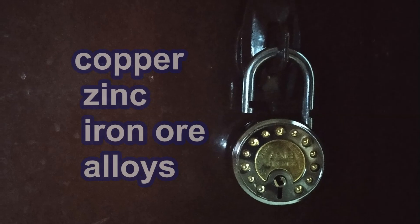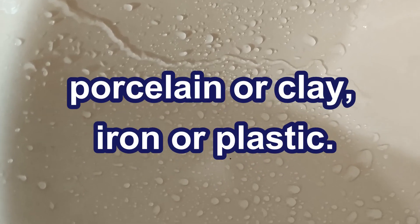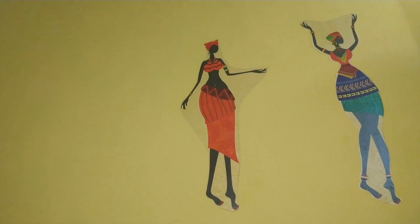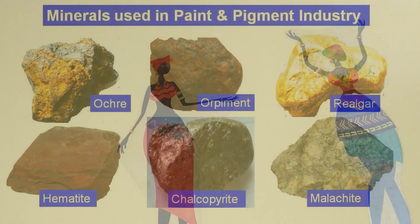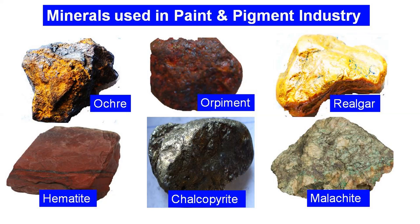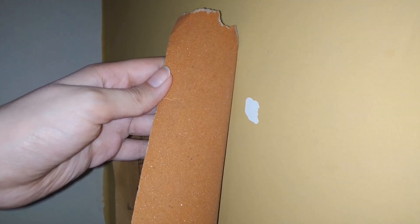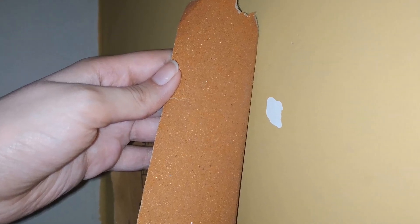Doorknobs, locks and hinges are made of brass or steel, which are copper, zinc, iron ore and alloys. Toilets, sinks and bathtubs are made of porcelain or clay, iron or plastic. The sewer system is made of clay, iron pipes or plastic pipes. If the house is painted, paint is manufactured with mineral fillers and pigments. Minerals used in paint and pigments are ochre, orpiment, realgar, hematite, chalcopyrite and malachite. The sandpaper used as abrasive paper for removing previous paint on the wall is made of coarse and fine grains of sand.